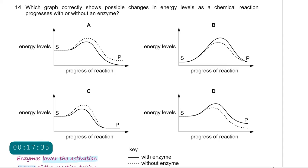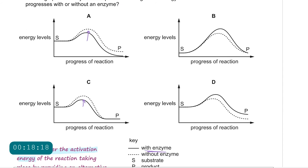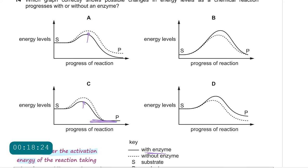Question 14: which graph correctly shows possible changes in energy levels as a chemical reaction proceeds with or without an enzyme? Enzymes lower the activation energy by providing an alternative pathway. The line representing the enzyme-catalyzed reaction will be much lower, representing lower activation energy. Both reactions must end up on the same energy level. The only suggestion that is correct is C, because the reactions cannot end on separate energy levels.